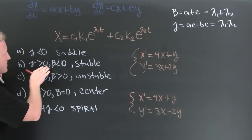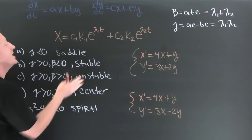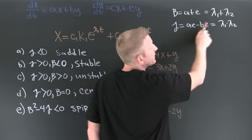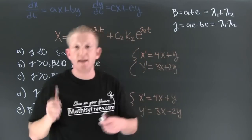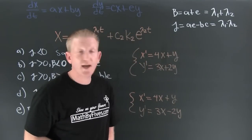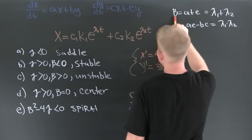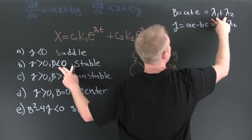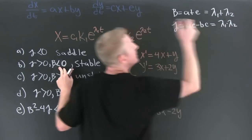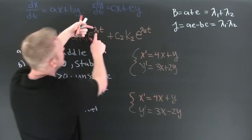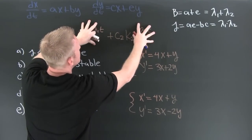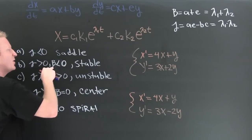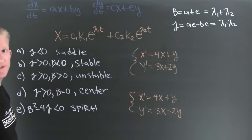If your determinant is bigger than zero and your trace is smaller than zero, then you're stable, and here's why. If the determinant is bigger than zero, that means the eigenvalues have the same sign. Which sign? That's why we're looking at the trace. Because they have the same sign, you're going to add them, and if the sum is smaller than zero, that means both eigenvalues are negative. So as t goes on, this term is going to get smaller and smaller until it's eventually zero and it sucks into a sink.